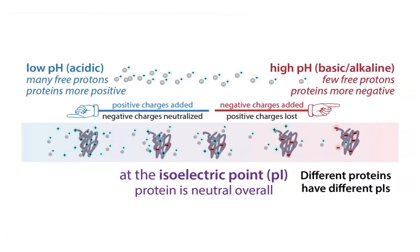For cation exchange, you need a lower pH to ensure the protein is positively charged. For anion exchange, you need a higher pH to ensure the protein is negatively charged. You can look up the pI for different proteins using software like ExPASy ProtParam, which can be linked directly from the UniProt entry for a given protein. You can find the computed pI and go from there. Note that proteins can sometimes behave unexpectedly — computed pIs are based on isolated amino acids, but in the context of a whole protein things can differ.